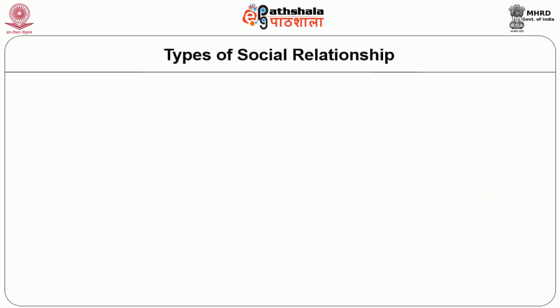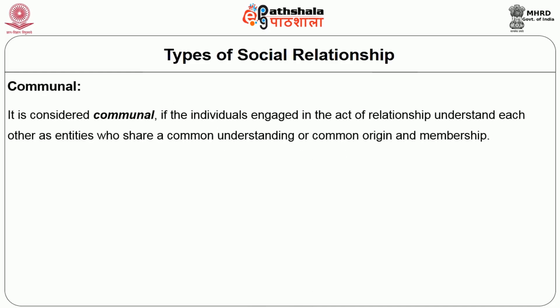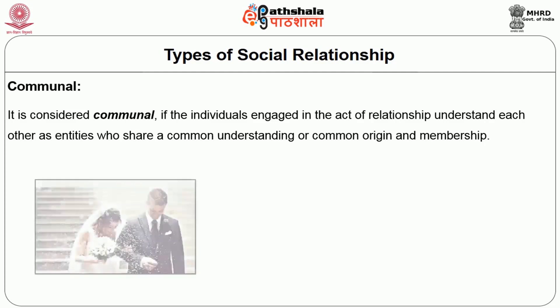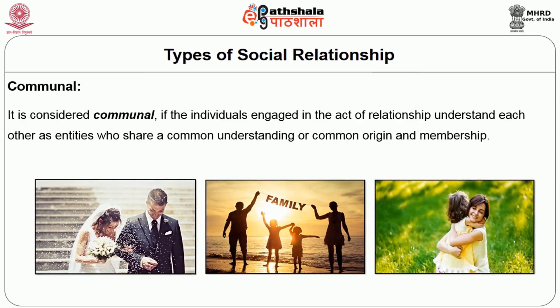Types of social relationship. Social relationships can be of two major types: communal or associative. It is considered communal if the individuals engaged in the relationship understand each other as entities who share a common understanding or common origin and membership. In this case, marriage or family can be an appropriate example of this form of relationship. Affection or love, understanding and tradition may be the key bonds to this type of social relationship.